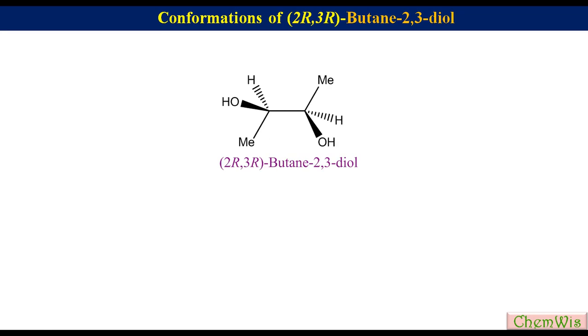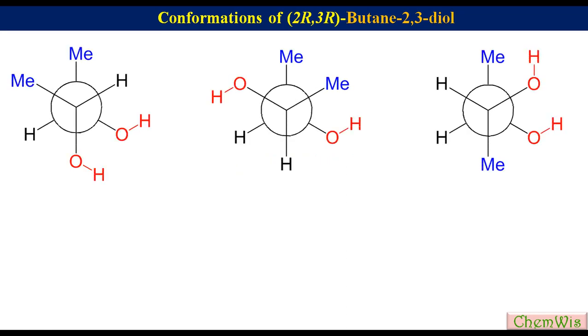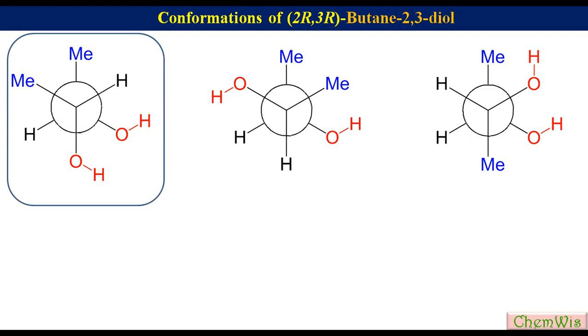Now let's discuss the conformers of one of the two enantiomers — say 2R,3R-butane-2,3-diol. These are the three conformers. We label them according to the previous convention. In this conformer, the two methyl groups and two hydroxyl groups have a gauche relation, so we label it GGT, where T stands for threo.